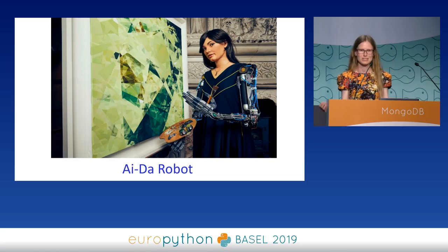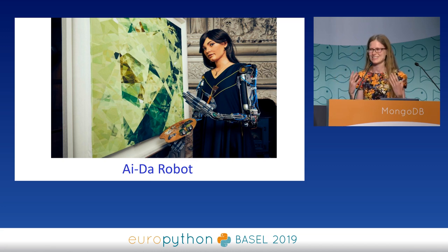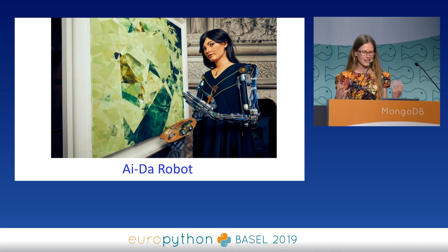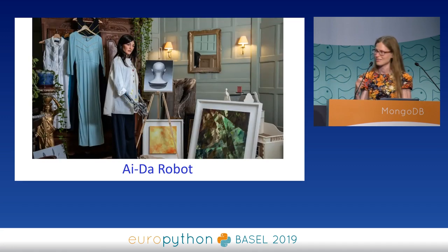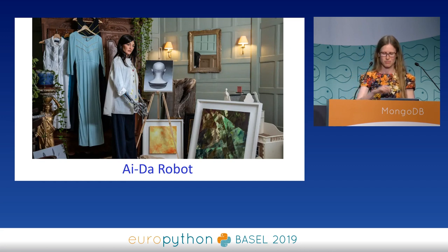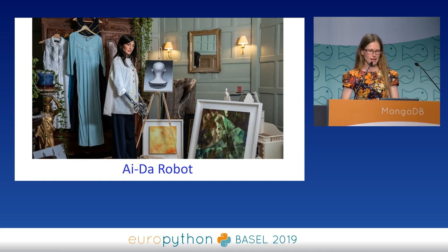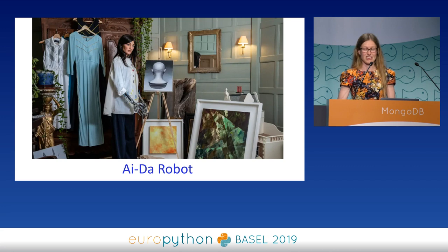Another recent project is called Ida Robot. This one was designed by an art dealer in Oxford who always used to sell modern art — like Picasso and so on — and then decided that AI art is the future. So clearly, a robot AI artist is also the future. She can draw portraits of people based on facial recognition and then use robotics to draw that. It's a curious project that highlights how trendy AI art is now, if art dealers are also jumping on the bandwagon.